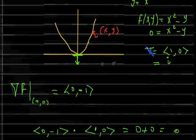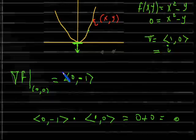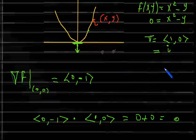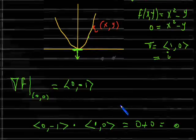So now to show that the gradient vector (0, −1) is perpendicular to the tangent vector (1, 0), all I have to do is take their dot product. Taking the dot product gives 0·1 + (−1)·0 = 0. Therefore, the vector (0, −1) and the vector (1, 0) are perpendicular. They are perpendicular vectors, and that is what I wanted to explain.